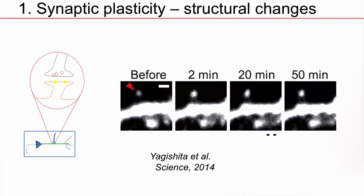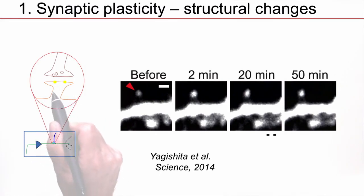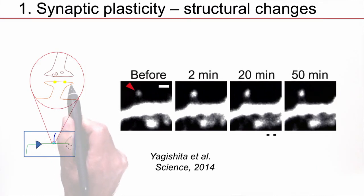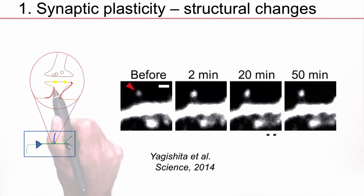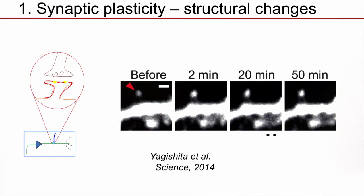What happens in biology if a weight changes? I've turned around my image of the neuron, and now you see here the synapses again. This is the part of the receiving neuron. This part is called the synaptic spine, and in there there are ion channels. Nowadays, it is possible to record directly, to visualize directly the spine, the size of the synapse.